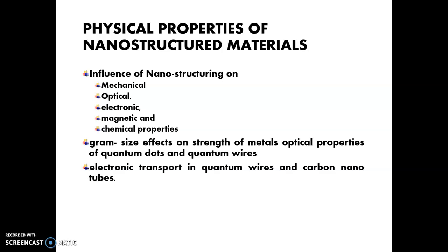By varying the size effect, the strength of metals will vary in the mechanical property as well as the optical property. The electronic transport in quantum wires and carbon nanotubes — when you are changing that, the electronic transport in quantum wires and carbon nanotubes will also be affected.